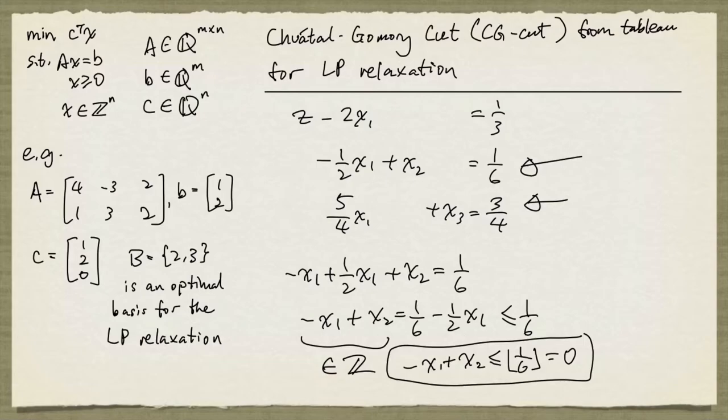I'm going to split 5/4 into 1 plus 1/4. Bringing 1/4 x1 to the other side, I get x1 plus x3 equals 3/4 minus 1/4 x1. We notice again that x1 is non-negative, so this is at most 3/4.